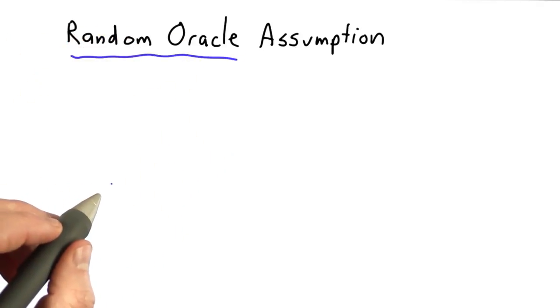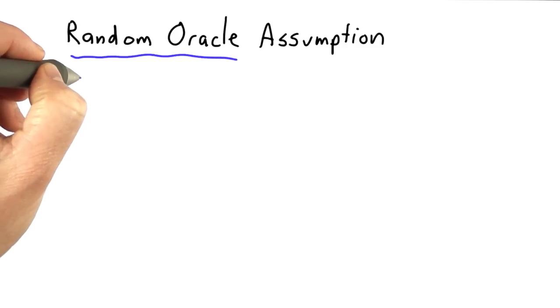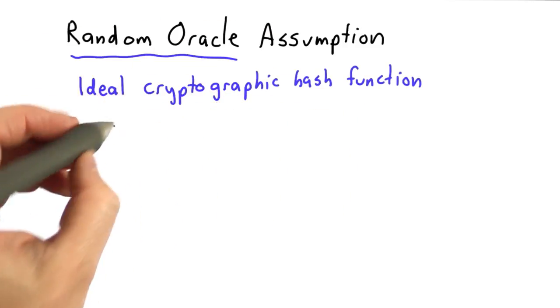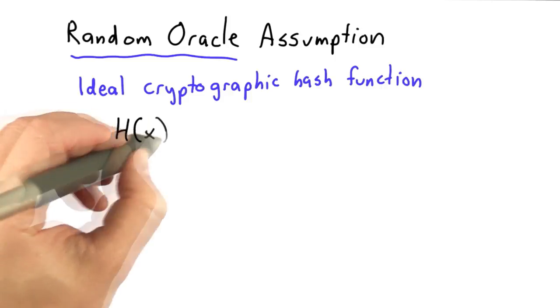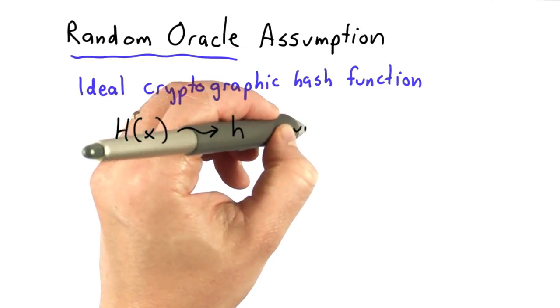We're going to assume that we have what we know as a random oracle, which is an ideal cryptographic hash function. This random oracle assumption means we can have an ideal cryptographic hash function that maps any input to H with a uniform distribution.